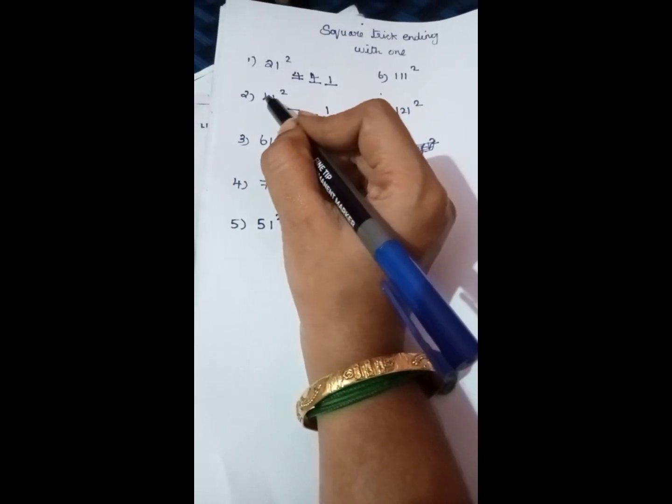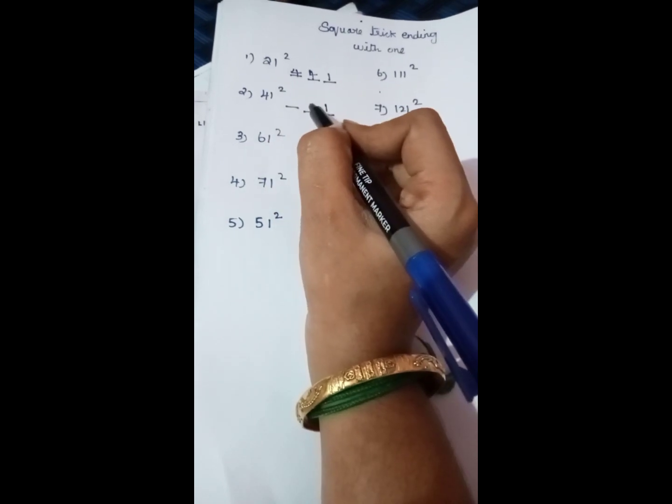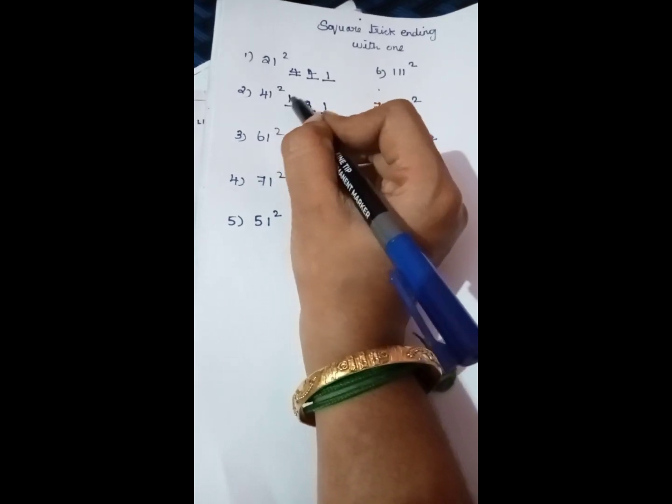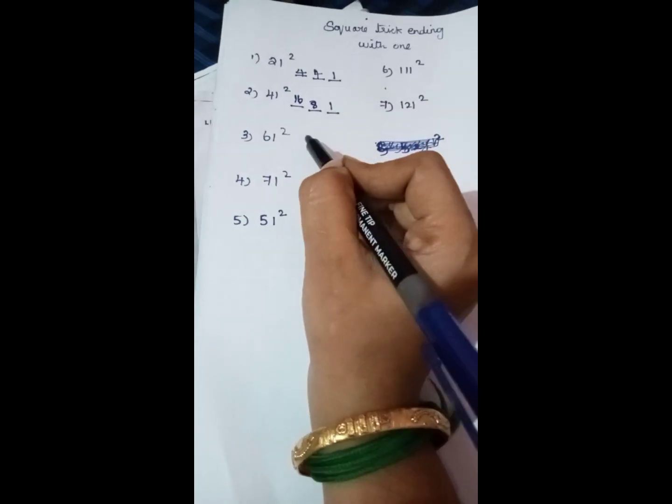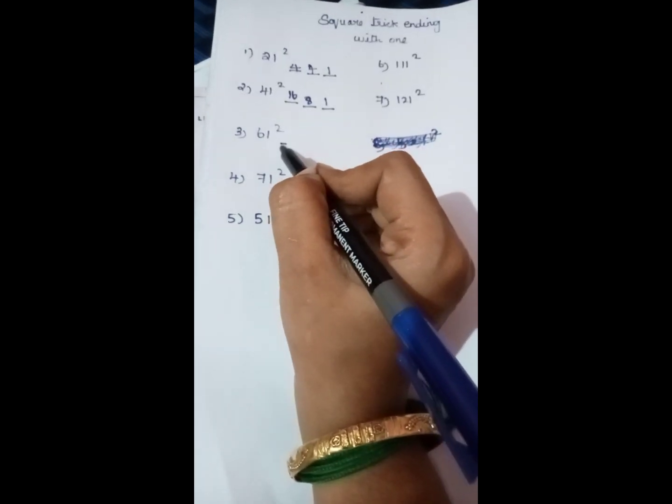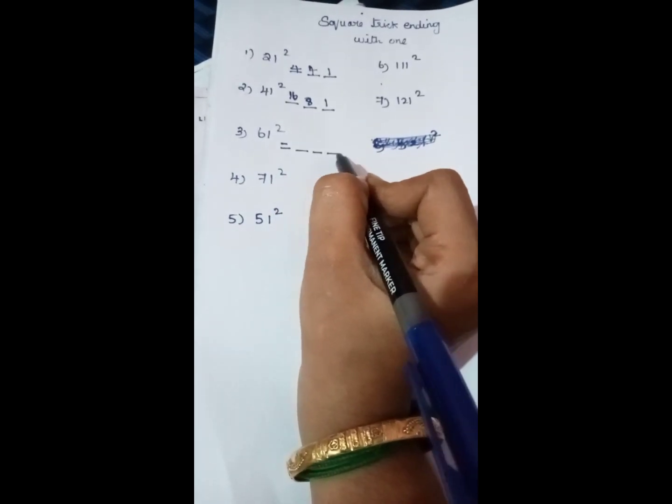And square the 4, which is 16, so the answer is 1681. Next, 61 square. Square 1, which is 1.